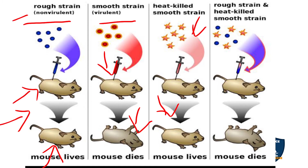When the rough (R) strain and the heat-killed smooth (S) strain were combined and injected into a rat, the mouse died. This happened because the S strain still retained its genetic material; only the cell wall was lost. When mixed with the R strain, the R strain acquired the S strain's genetic material, becoming virulent.